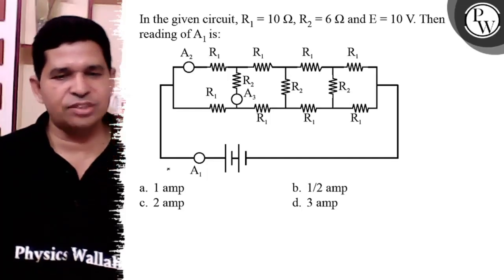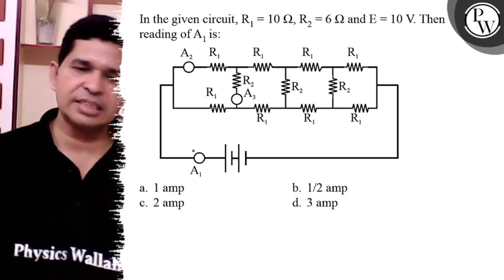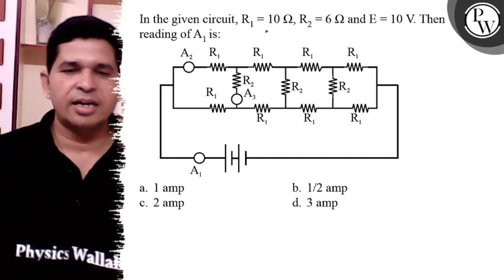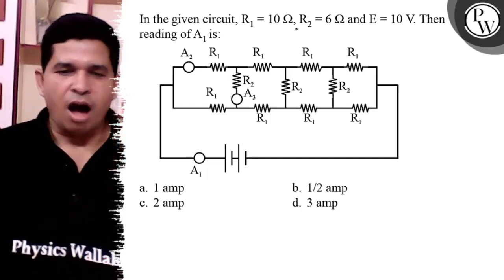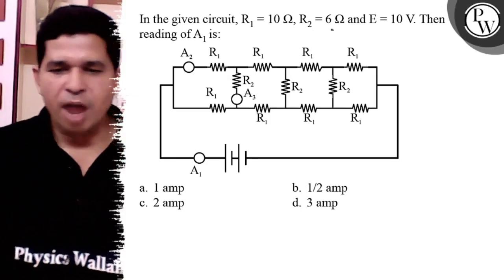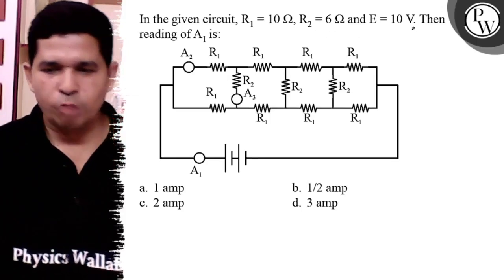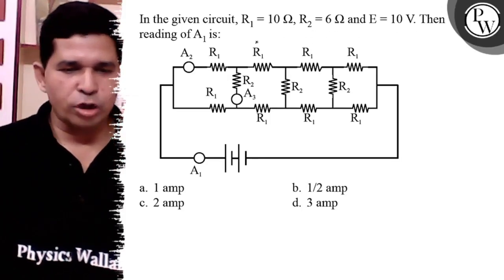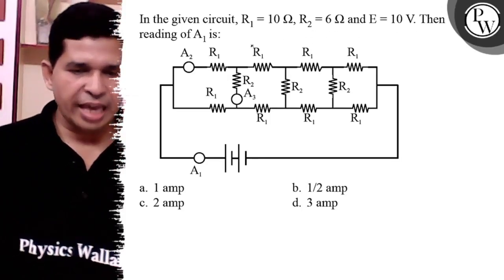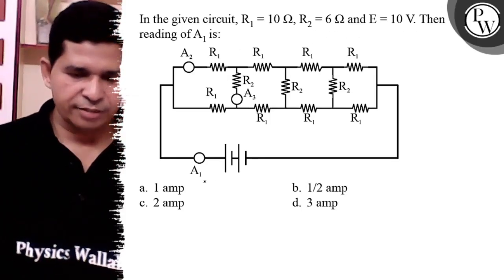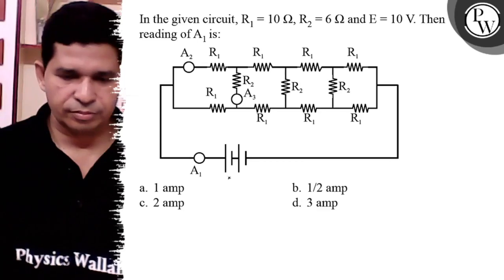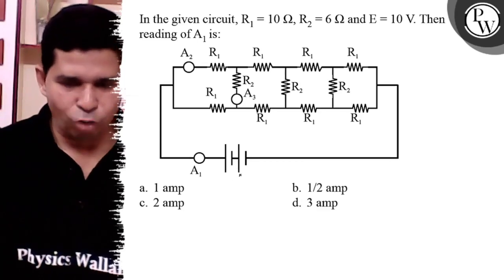Hello Bachchan, let us see this question. In the circuit, R1 is 10 ohm, R2 is 6 ohm, E is 10 volt. The reading of ammeter A1 is given, and the voltage is 10 volt.